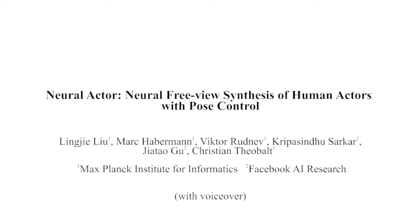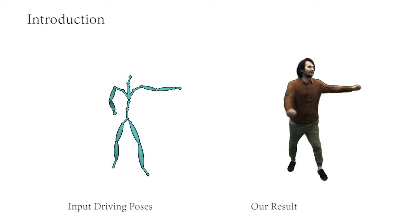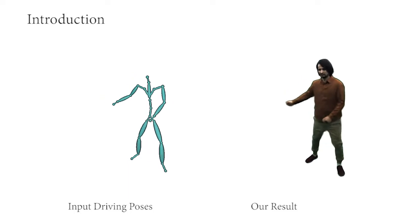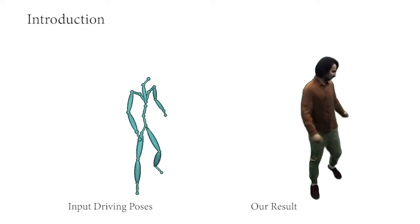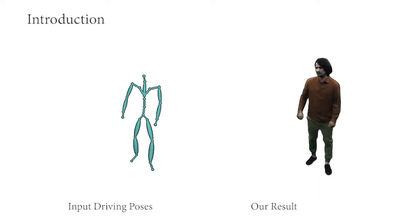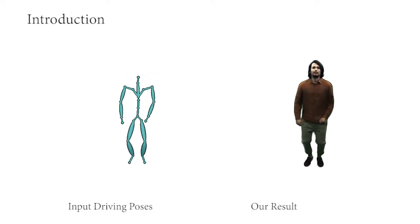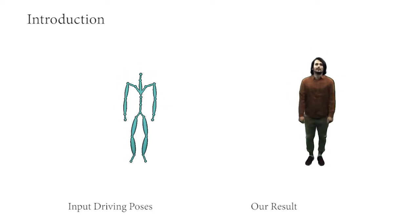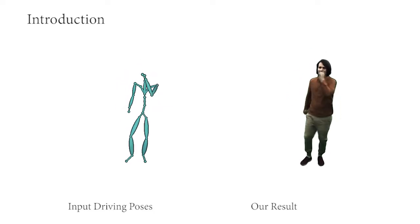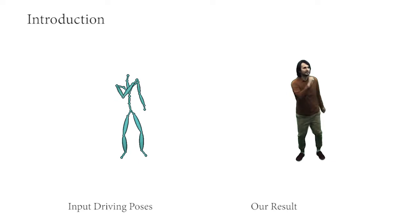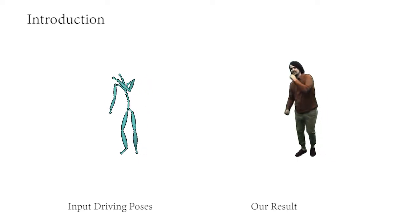We present Neural Actor, a new method for free view synthesis of human actors which allows arbitrary pose control. Given a sequence of driving poses, as well as a virtual camera as input, our method can synthesize realistic animations of the actor with pose and view dependent dynamic appearance, sharp features, and high fidelity wrinkle patterns.